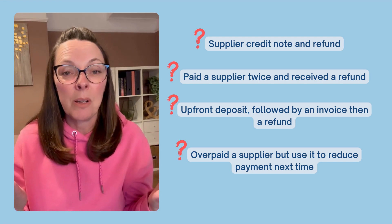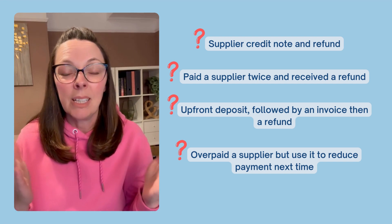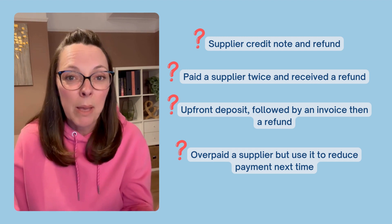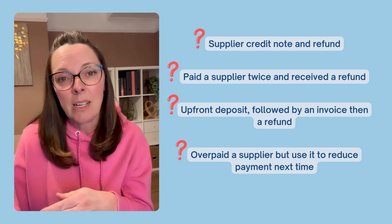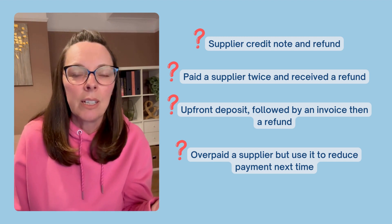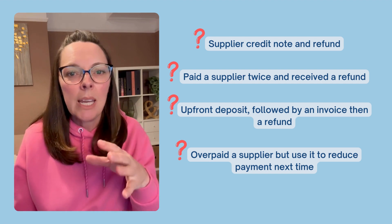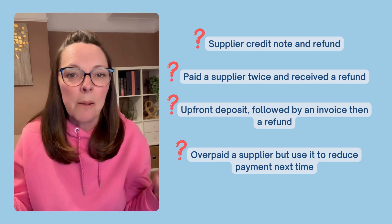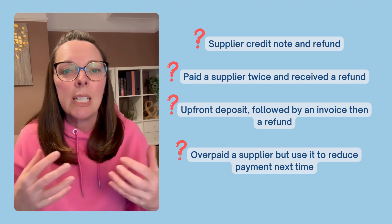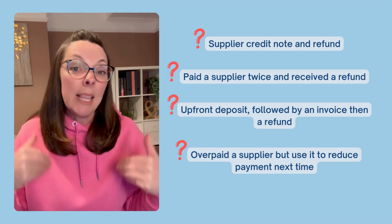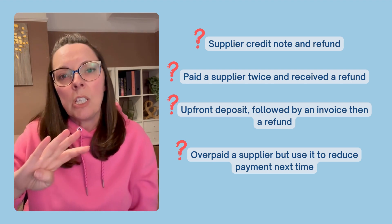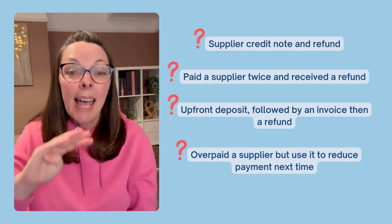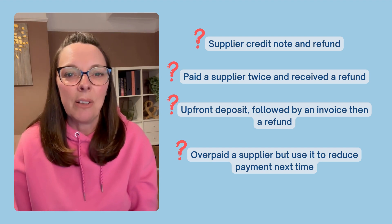So you paid a supplier the wrong amount, maybe you paid them twice, maybe you paid them the wrong amount. Perhaps they've sent you a credit note and then a refund, so you've got all this money going in and out of your bank account and you don't know how to match them all together or how to deal with it in Xero. In this video there are four scenarios that you may find yourself in and how you deal with them in Xero.